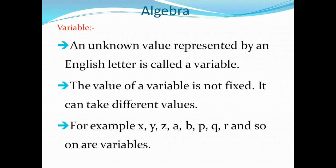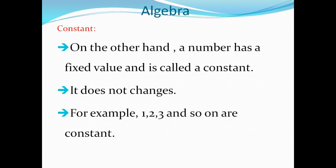Second, what is a constant? Constant means it is a number that has a fixed value — it is called a constant. It does not change. For example, 1, 2, 3, and so on are constants. Constant means it has a fixed value and does not change.